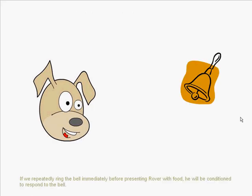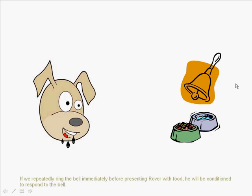Now we're going to repeat this process. If we repeatedly ring the bell before presenting Rover with food, he'll be conditioned to respond to the bell.